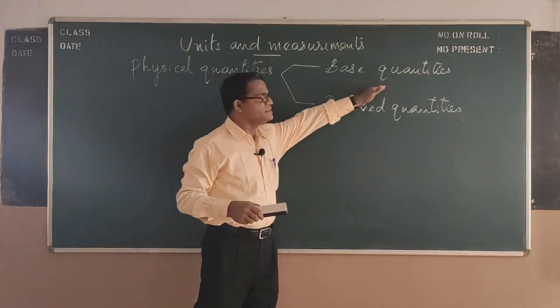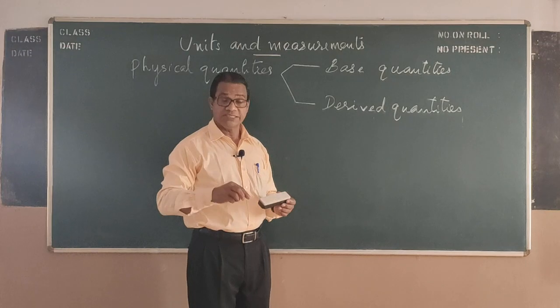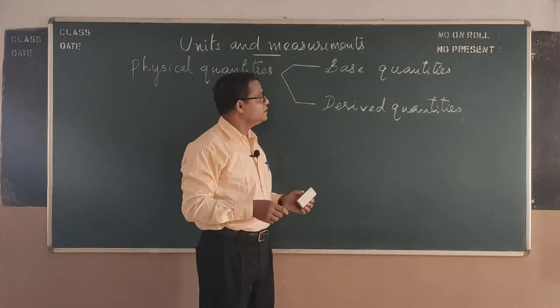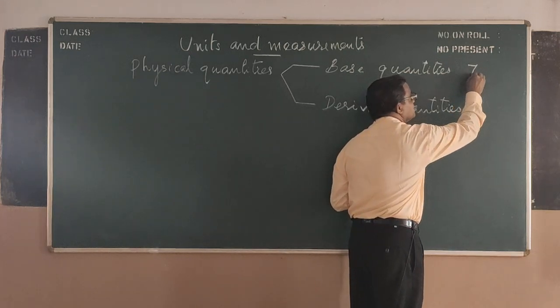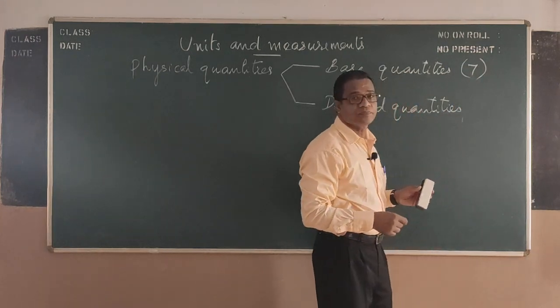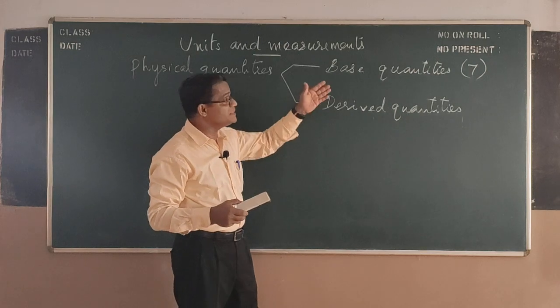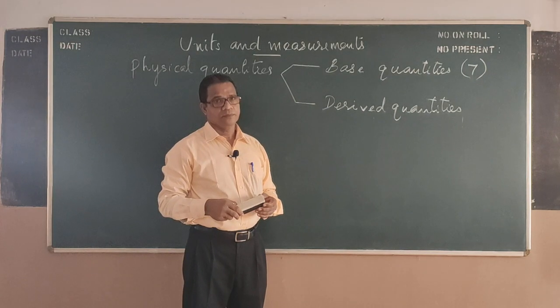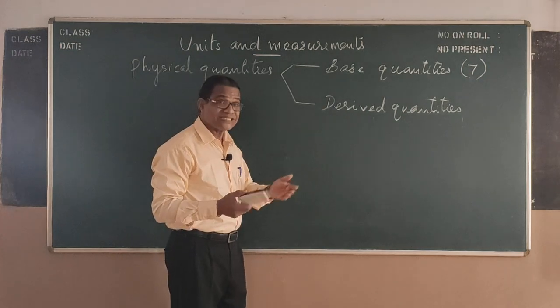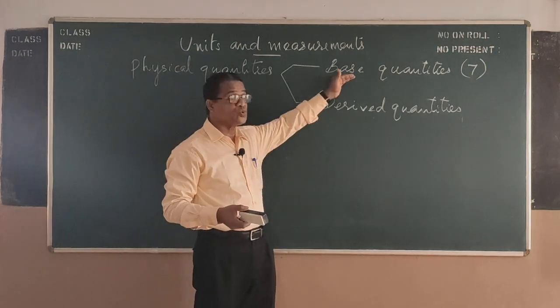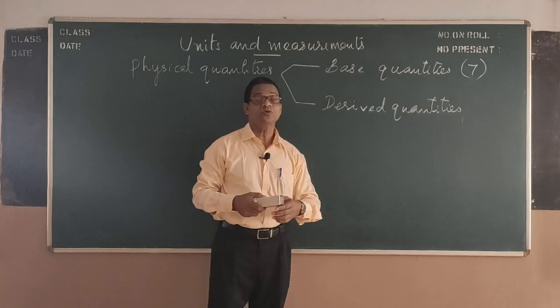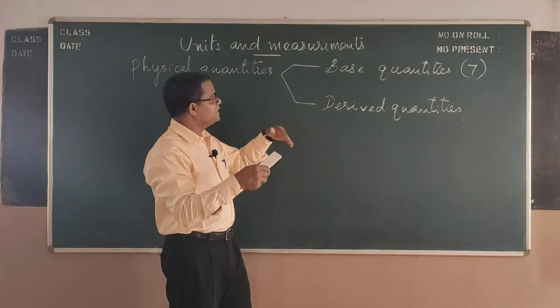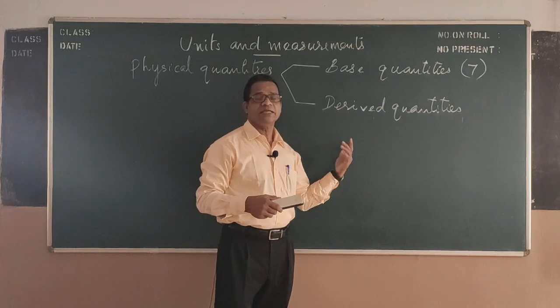Base quantities are very limited, that is independent. And actually there are seven base quantities we have listed. Derived quantities can be obtained from base quantities.